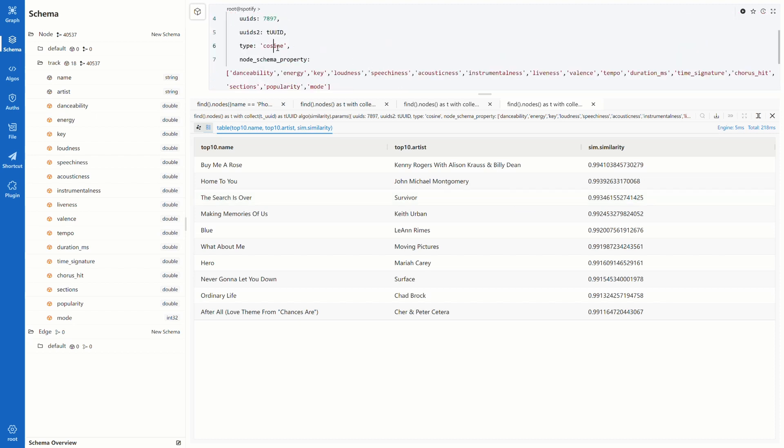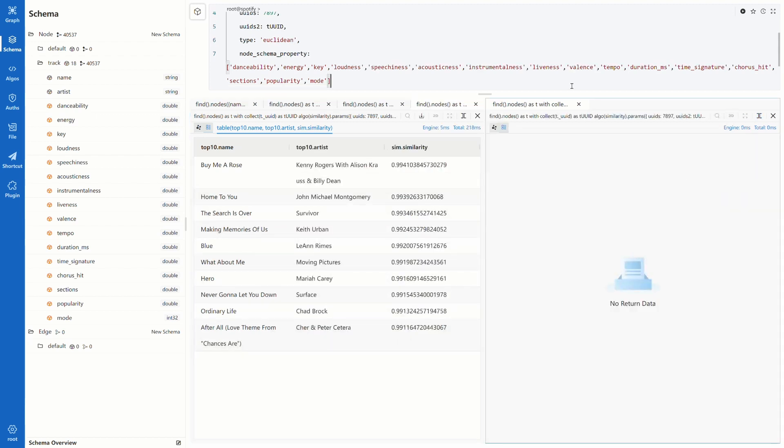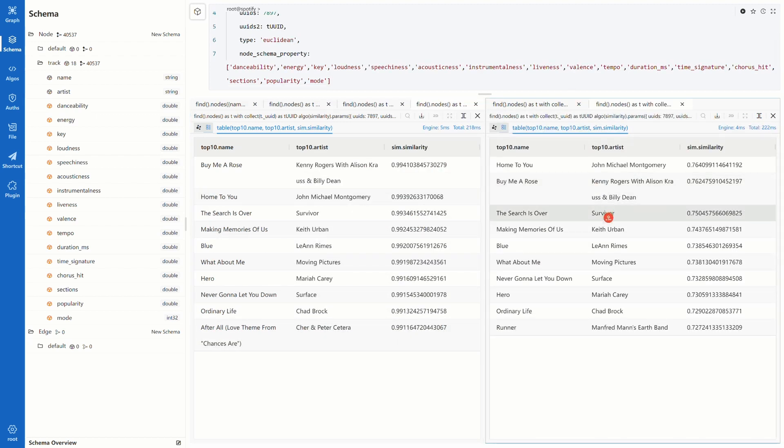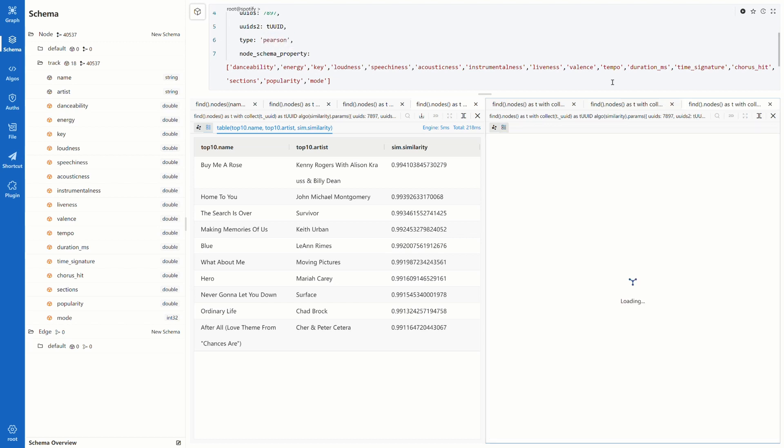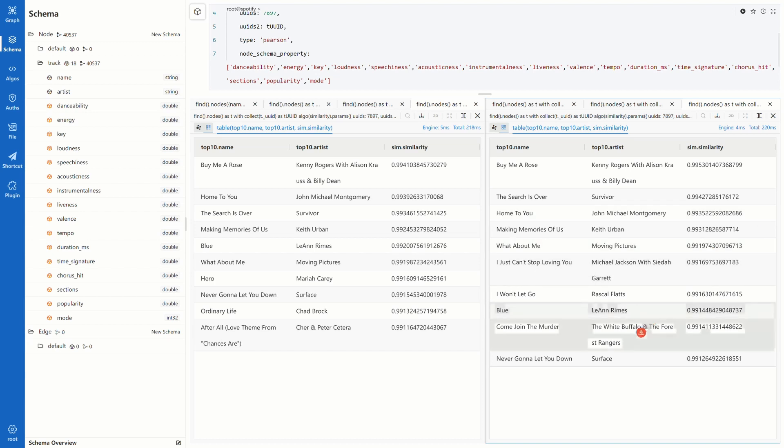Of course, you can change the type to Euclidean, and we see the two results are very similar. And the type can be Pearson too, but the results are more different. However, I would say that cosine similarity or Euclidean distance is more suitable for this case.